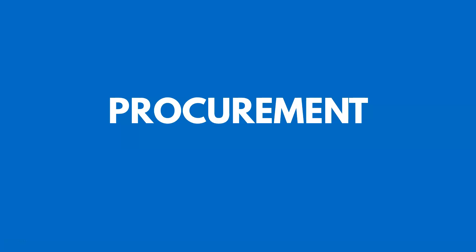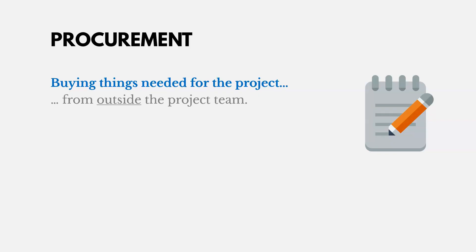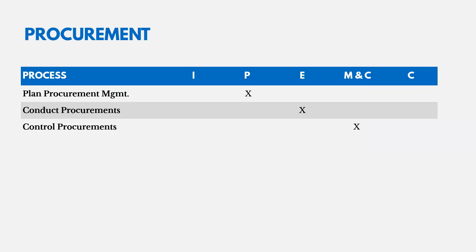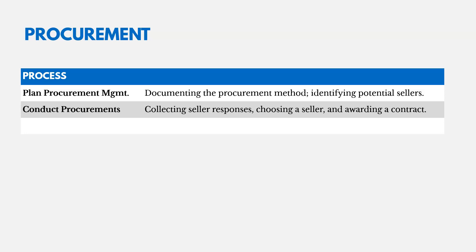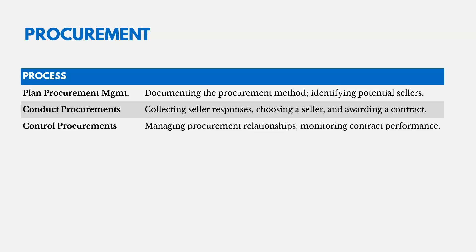Procurement management involves buying things needed for the project from outside our own team. There are three processes: one in planning, one in executing, and one in monitoring and controlling. We plan procurement management by documenting the procurement method, identifying what we need from outside sellers and potential sellers. We conduct procurements by collecting responses from sellers, choosing one, and awarding a contract. Then we control procurements by managing those relationships and monitoring contract performance.